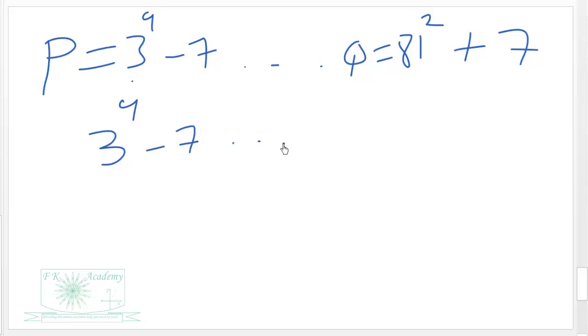Then 81 is the same as 3 exponent 4 exponent 2 plus 7. So we have 3 exponent 9 minus 7 compared to 3 exponent 4 times 2 is 8 plus 7.